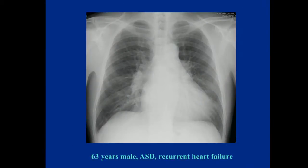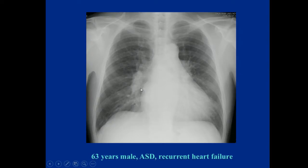First, I'd like to briefly summarize what transcatheter ASD closure is. Some new doctors are here. I selected an adult patient case because some adult cardiologists are here. This is a 63-year-old male ASD patient with a relatively enlarged heart and significantly increased pulmonary blood flow.